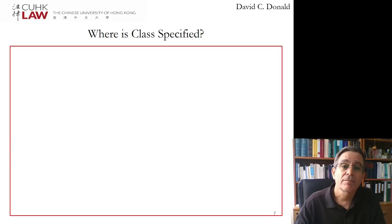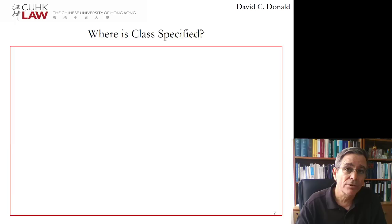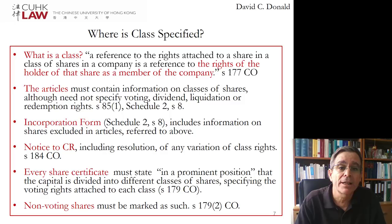If you're looking for a class of shares, the company documents will provide that. But if you want to understand what a class of shares is, look at the ordinance itself — section 177 — which defines a class of shares as the rights of the holder of that share as a member of the company being uniform.